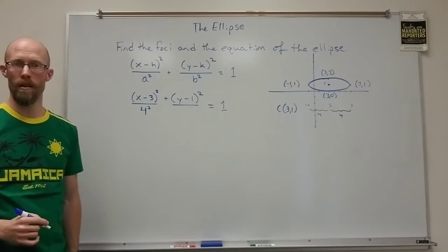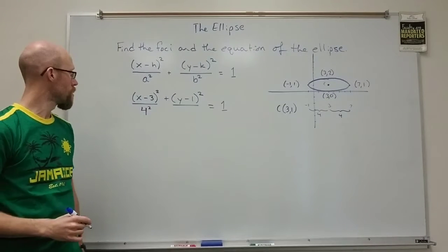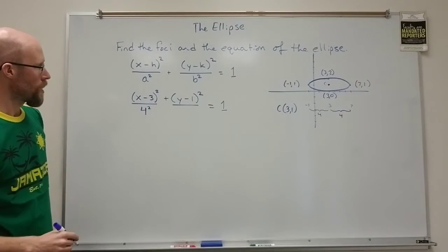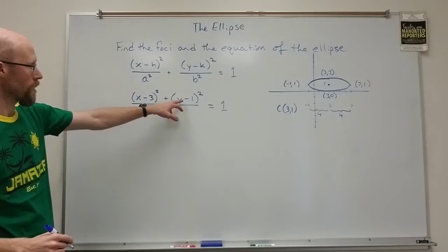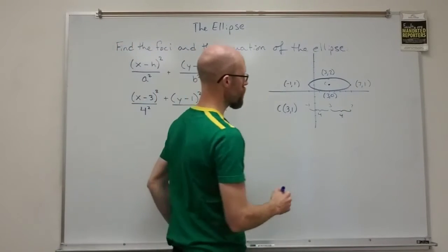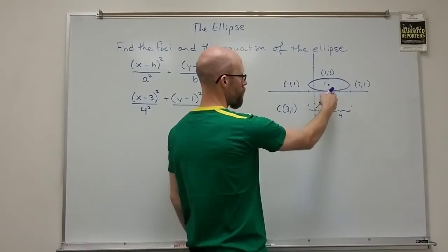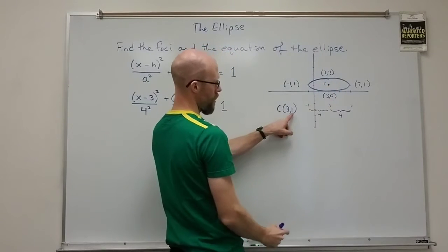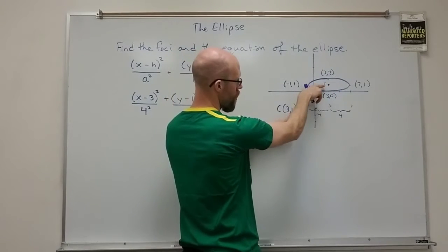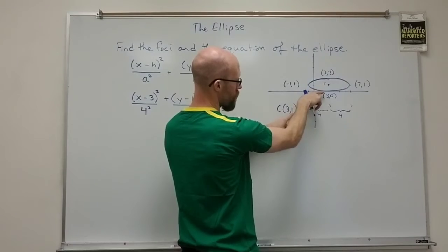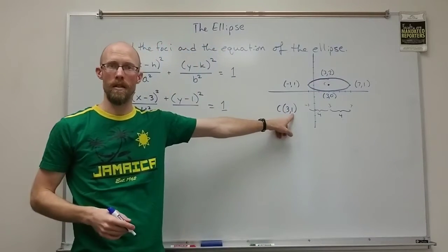So we get 4 squared under the x minus 3 squared term. Then vertically we're looking at the y value the minor axis. If I go from 1 which is my y value of the center I go up to 2 or down to 0. Either way that's a difference of 1.